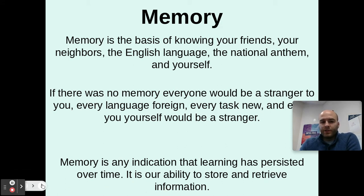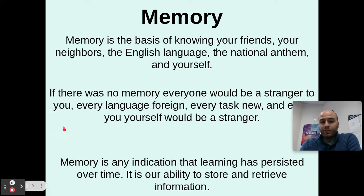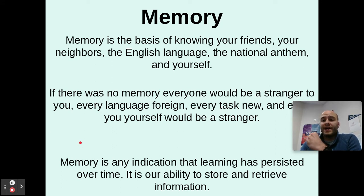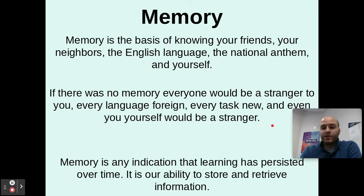Last unit, we focused on behavioral learning and how that's a relatively permanent change in your behavior. Now we're getting into cognitive learning, which is a relatively permanent change in your thinking or thought processes. And that's what memory really is — it shows that learning has persisted over time and there's been a change that has occurred in our knowledge.